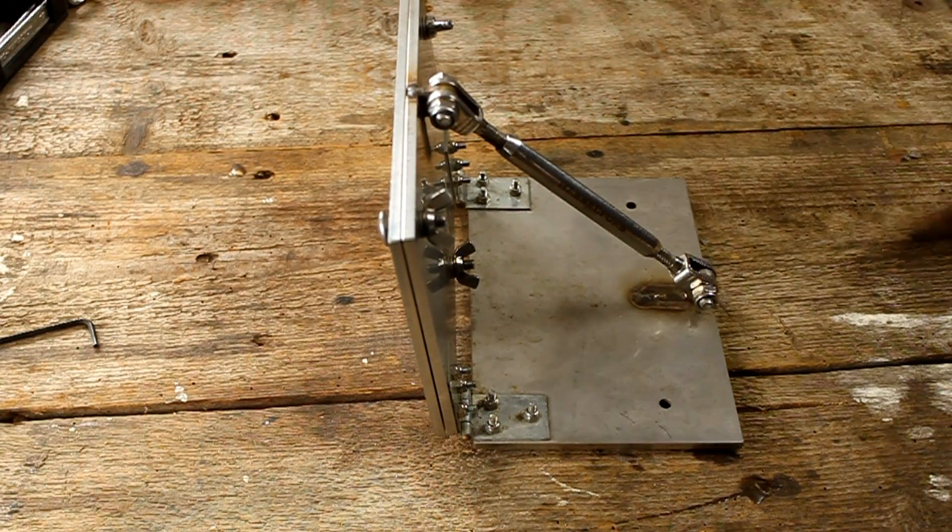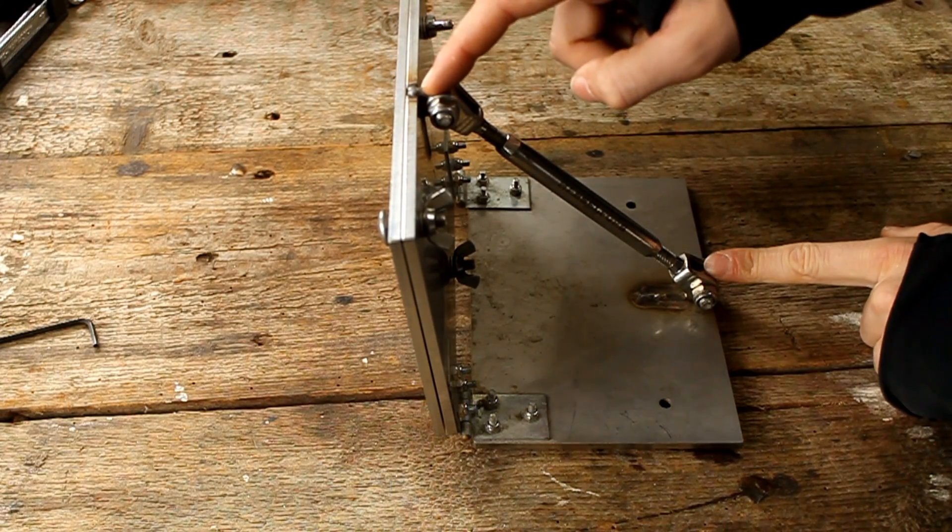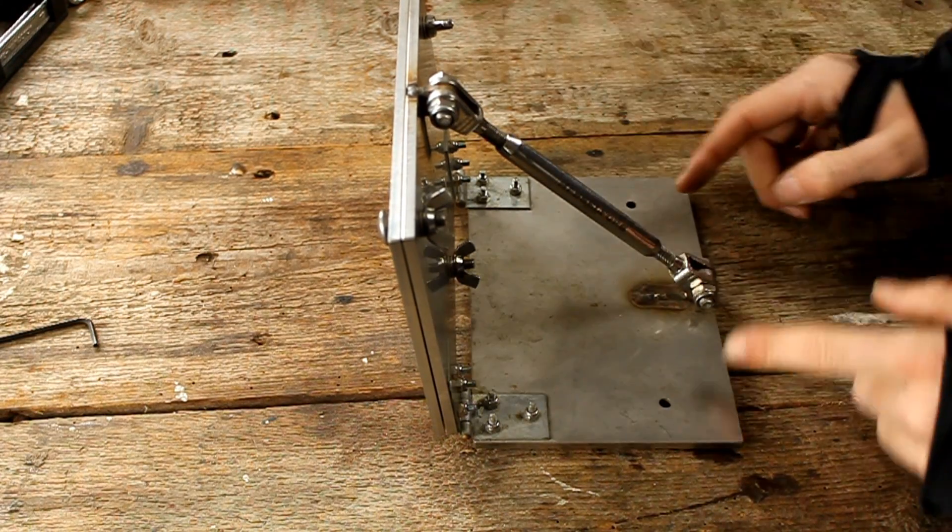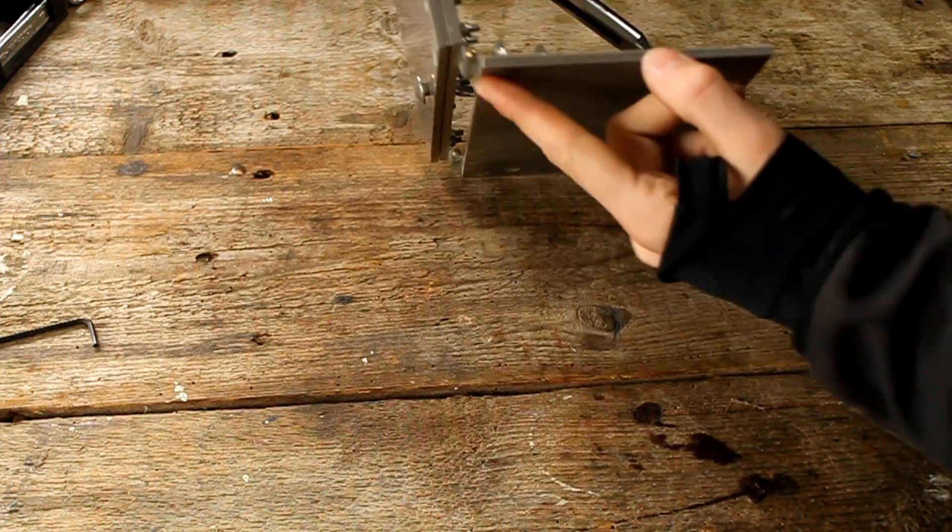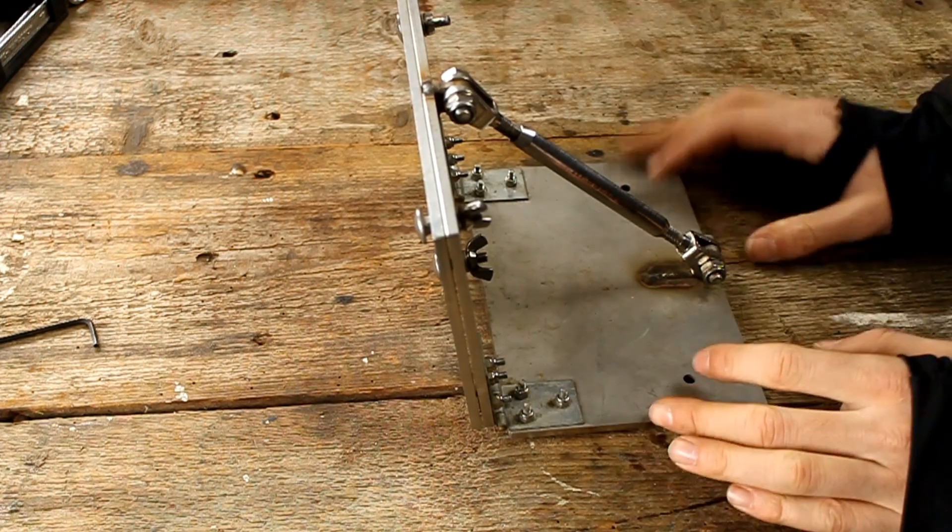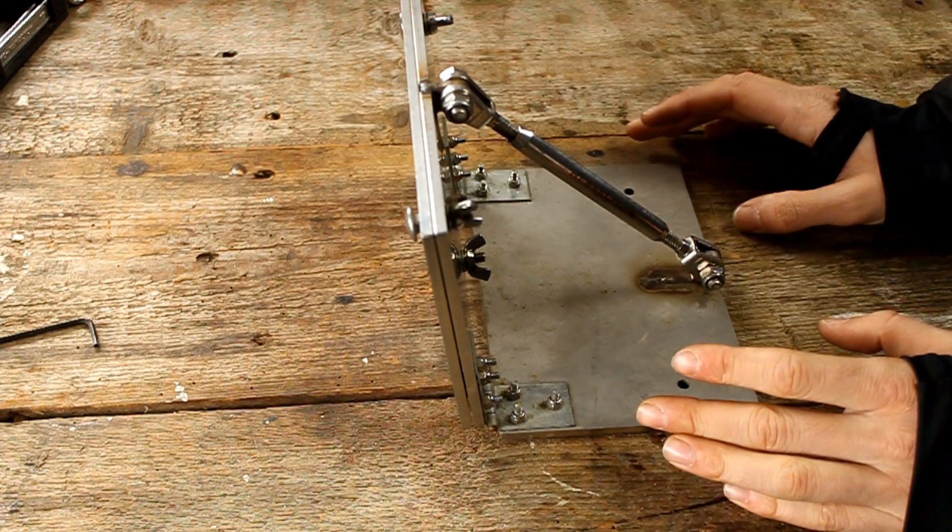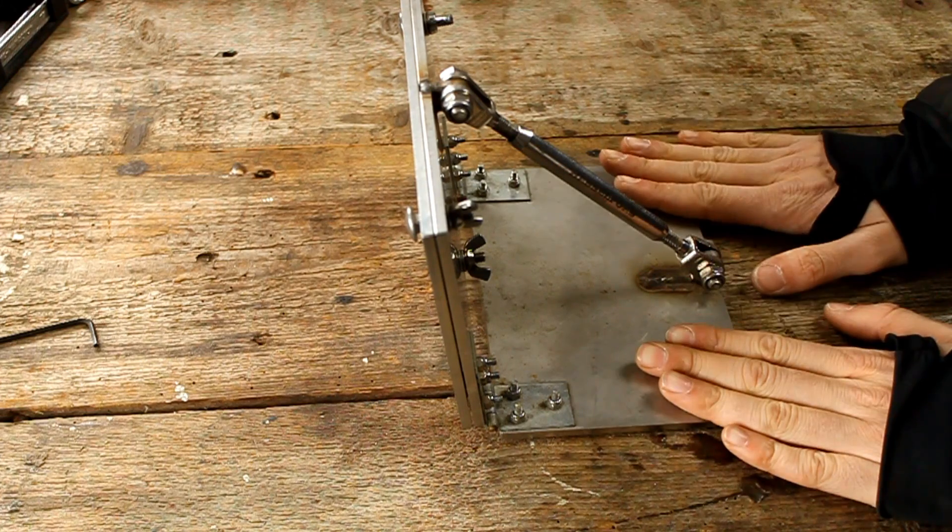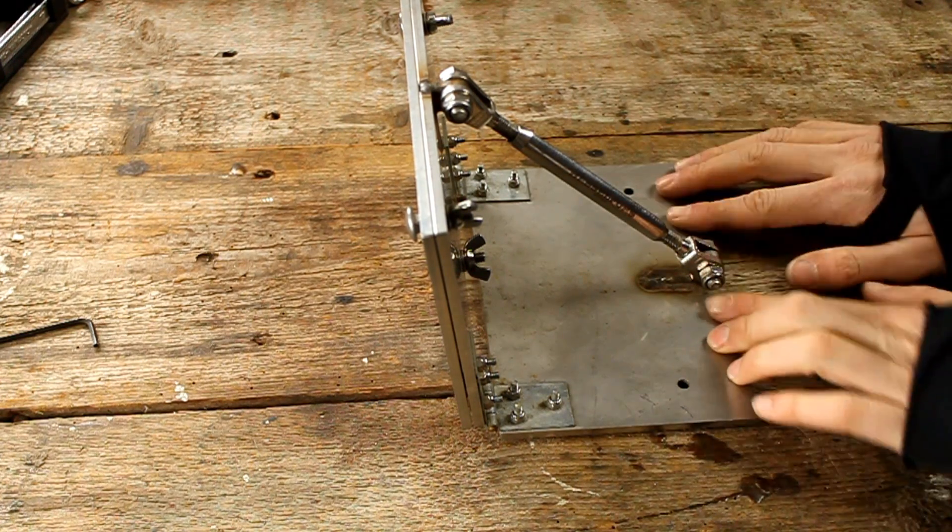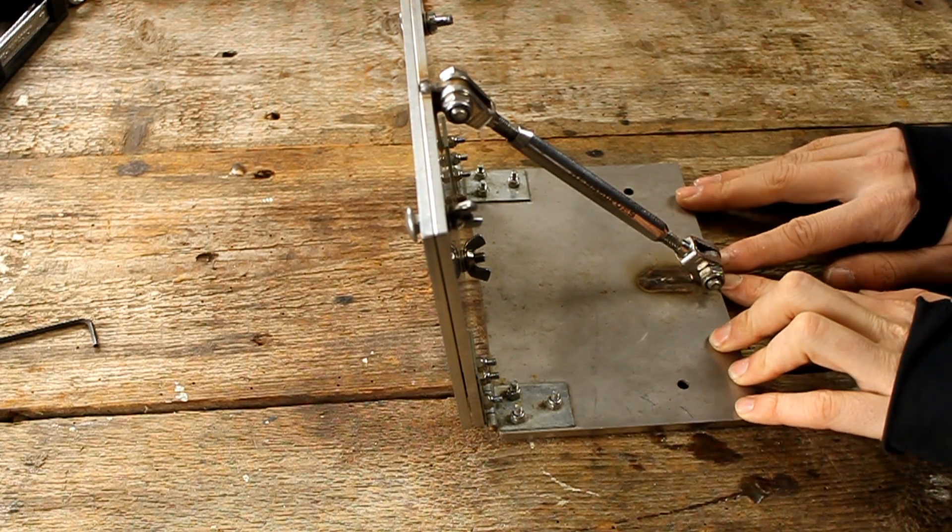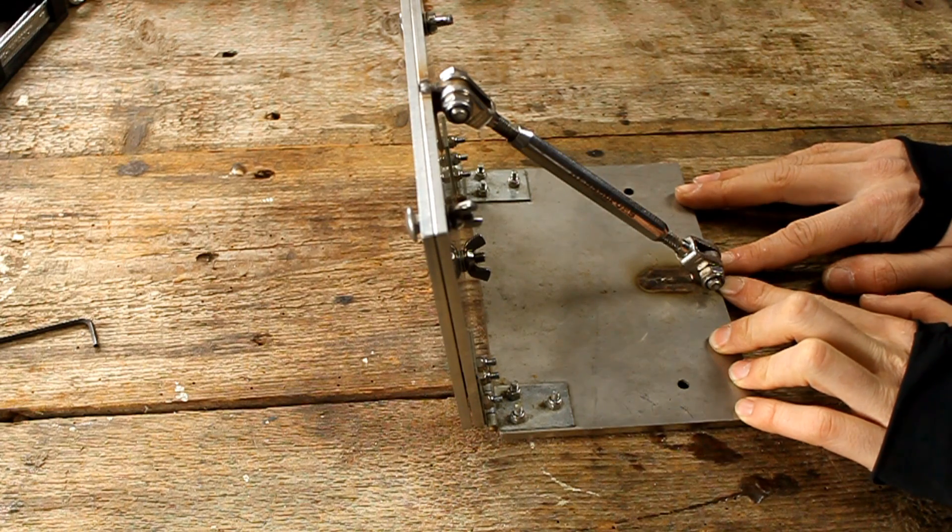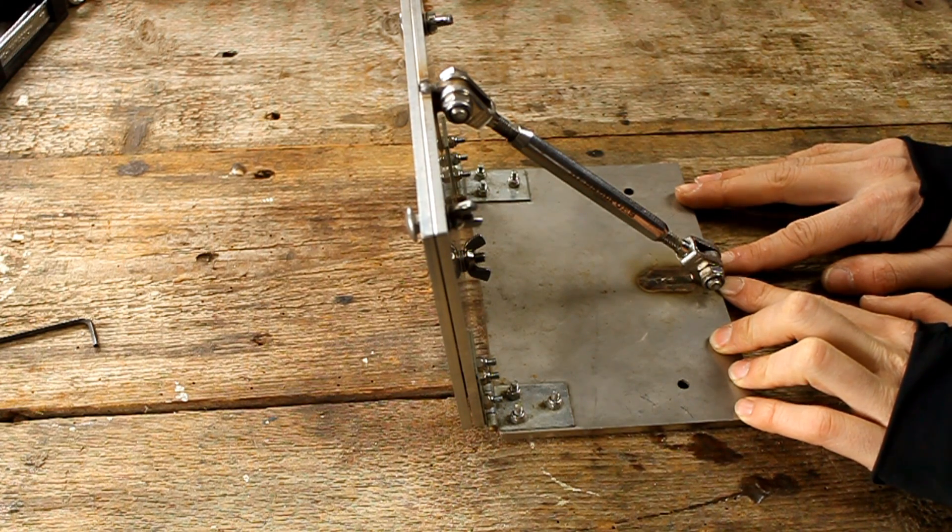So the jig is now finished. All we have to do is weld these two points, countersink the holes here and thread the entire thing together. So it's really easy. Make sure if you weld to clamp down the plate to make sure it stays flat. And now I'm going to show you how to grind blades with it.